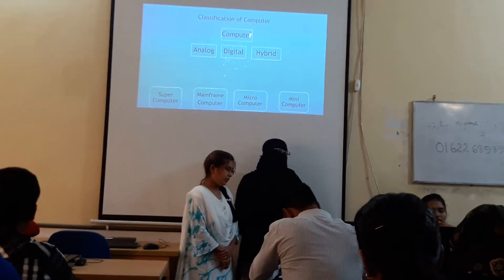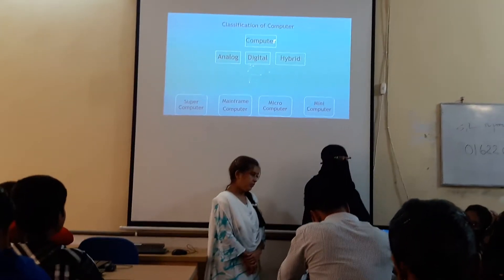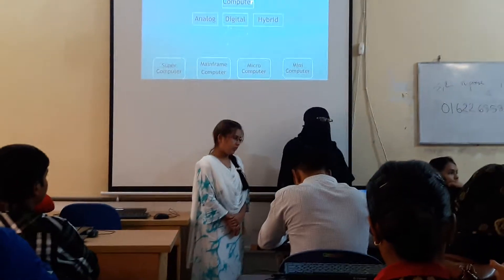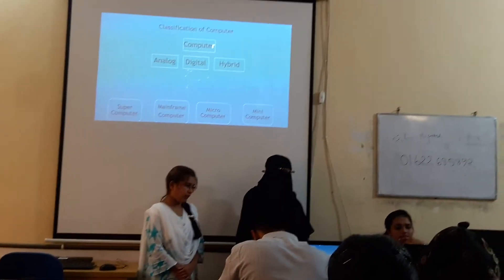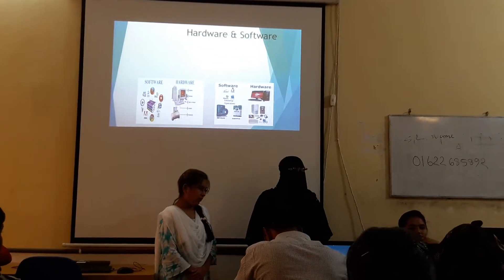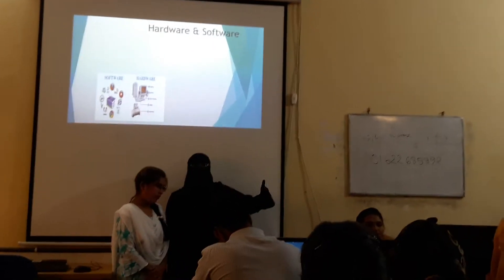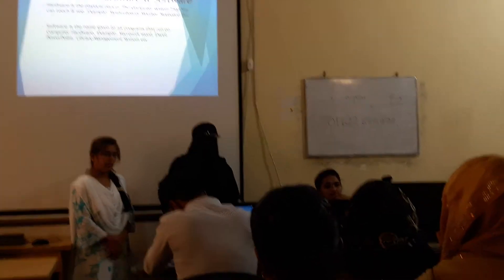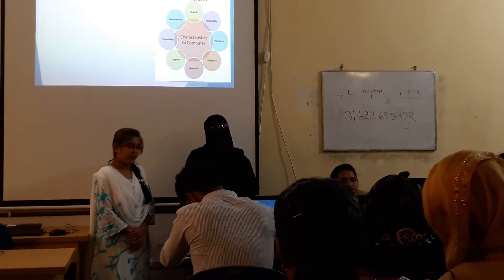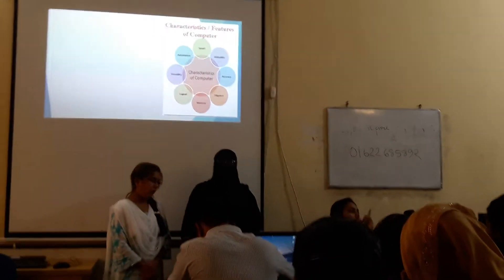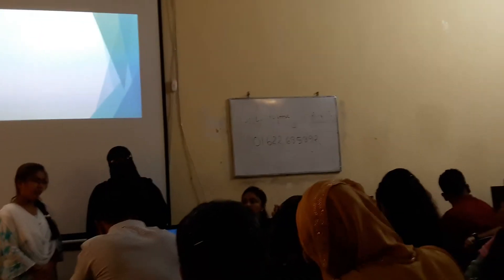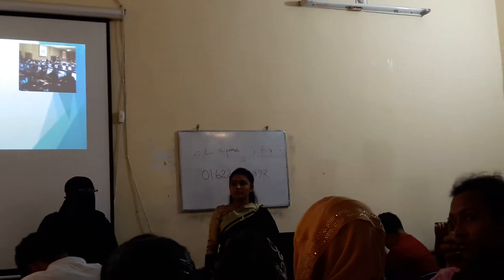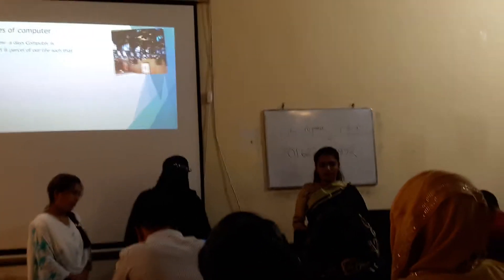Let's look at the classification of computers. There are mainly three classifications: analog computer, digital computer, and hybrid computer. Analog computer is the first generation computer. Digital computers now mainly have four parts: super computer, mini computer, mainframe computer, and micro computer. Every computer is also a classification of computers.